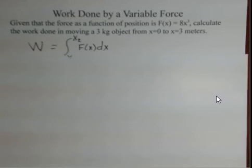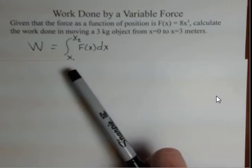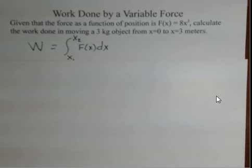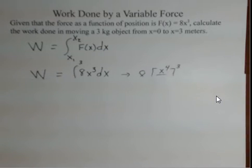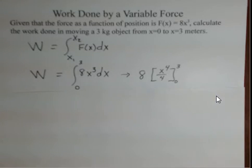To calculate the work done, we'll have to use the tools of calculus, the anti-derivative, and take the anti-derivative of f of x dx from a lower limit of x1 to an upper limit of x2. This is pretty direct. We have the f of x given to us, 8x cubed. The lower limit is 0 meters. The upper limit is 3 meters.